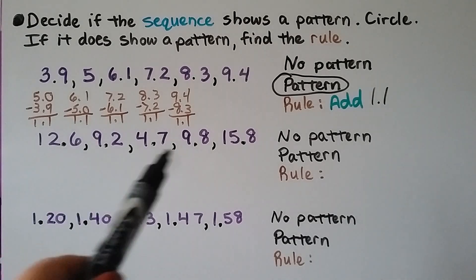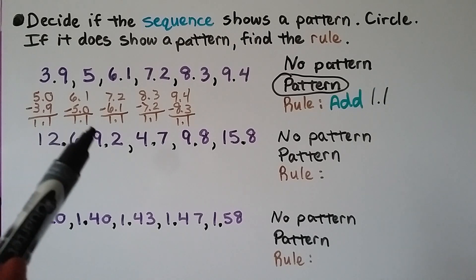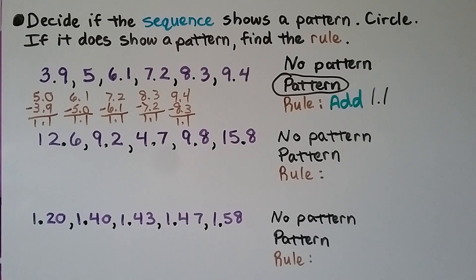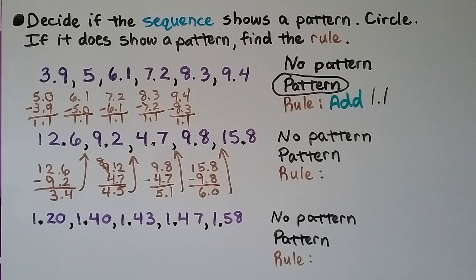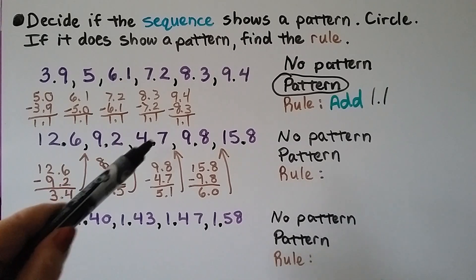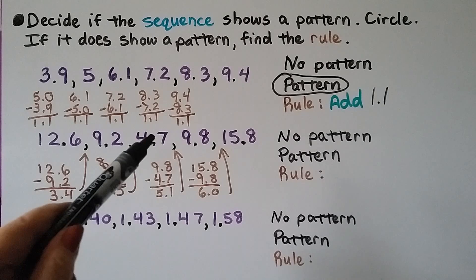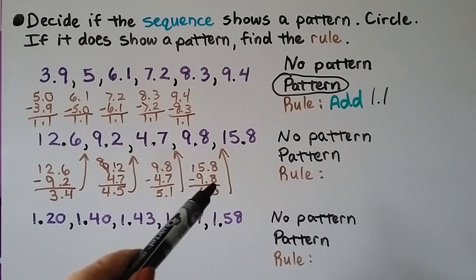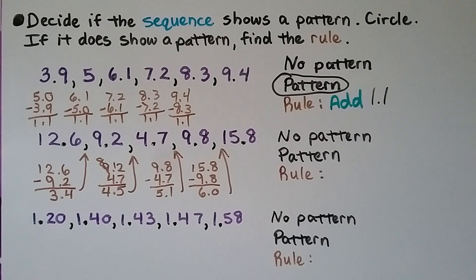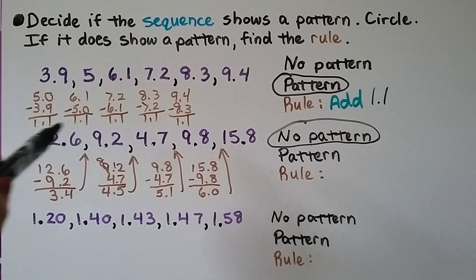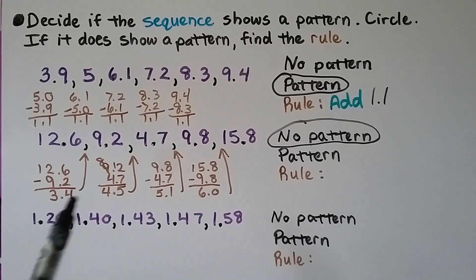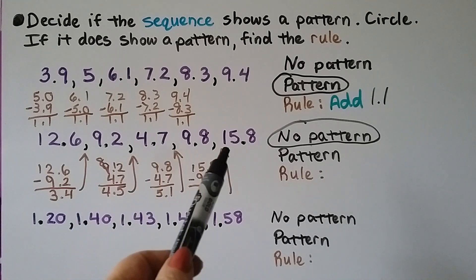Now we compare differences for this sequence: it goes from 12 and 6 tenths down to 9 and 2 tenths, then down to 4 and 7 tenths, but then back up again. Finding the differences: between 12 and 6 tenths and 9 and 2 tenths the difference is 3 and 4 tenths, but the next difference is 4 and 5 tenths, then 5 and 1 tenth, then 6. They're all different from each other, so there's no pattern.